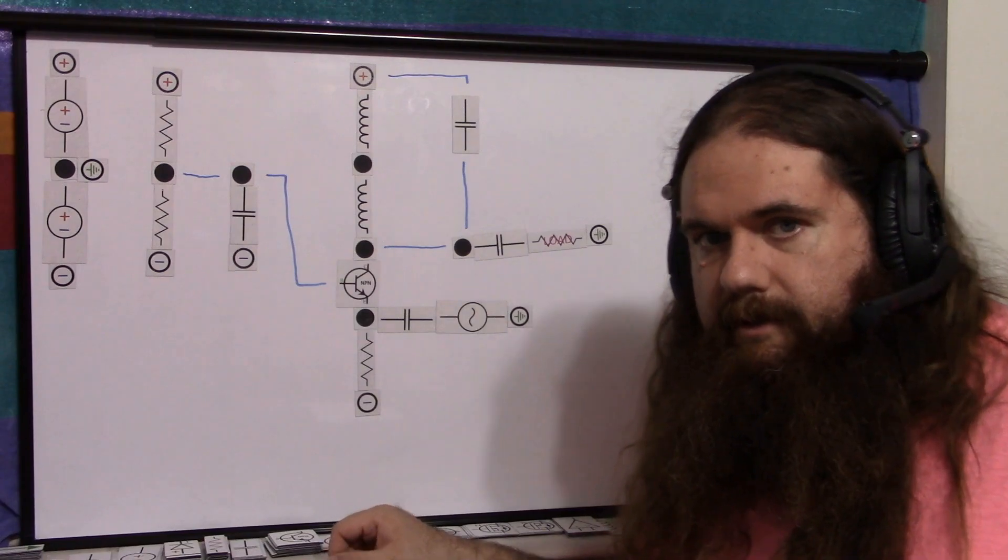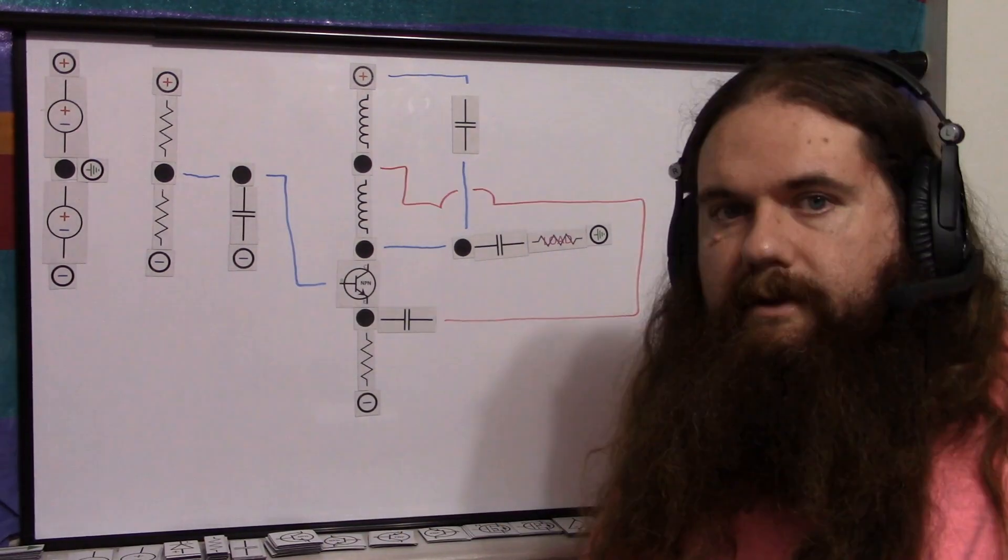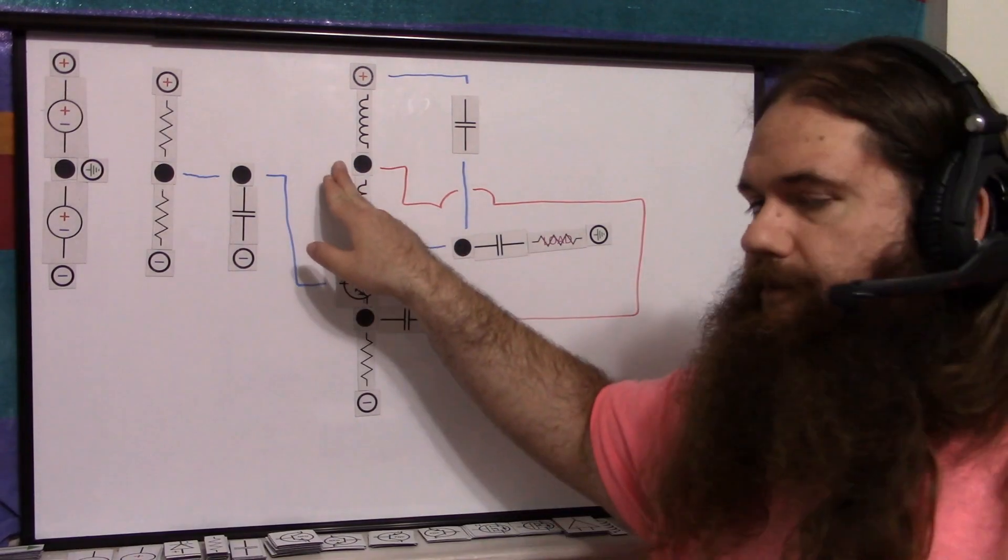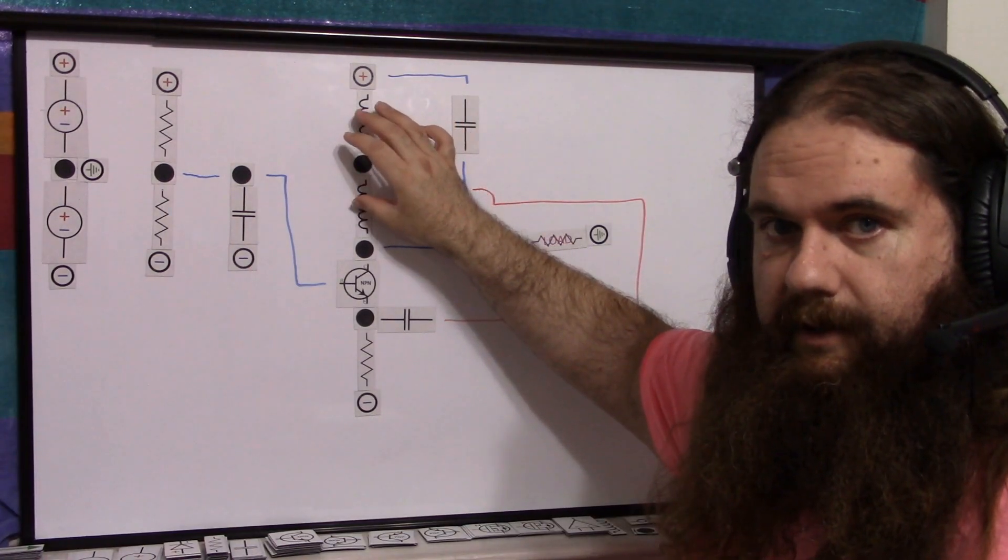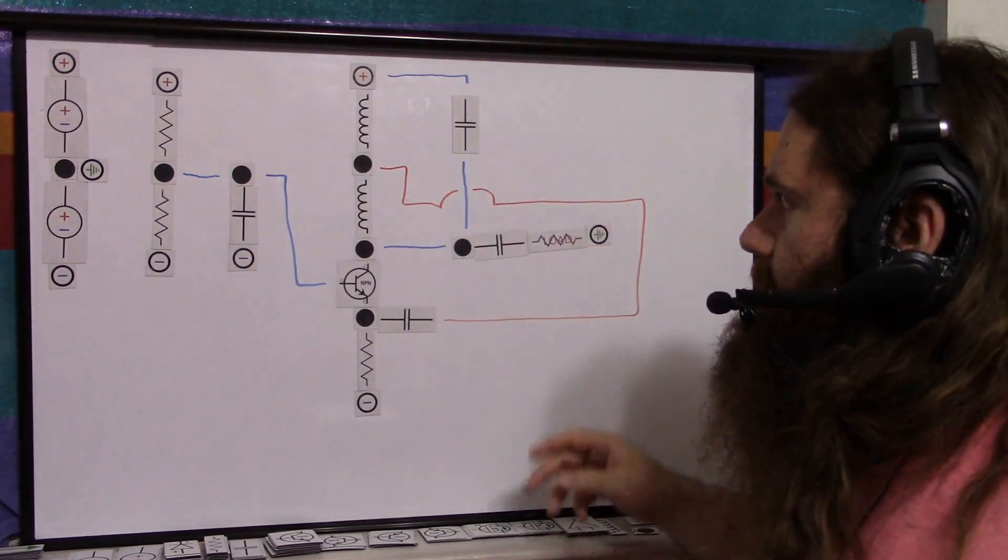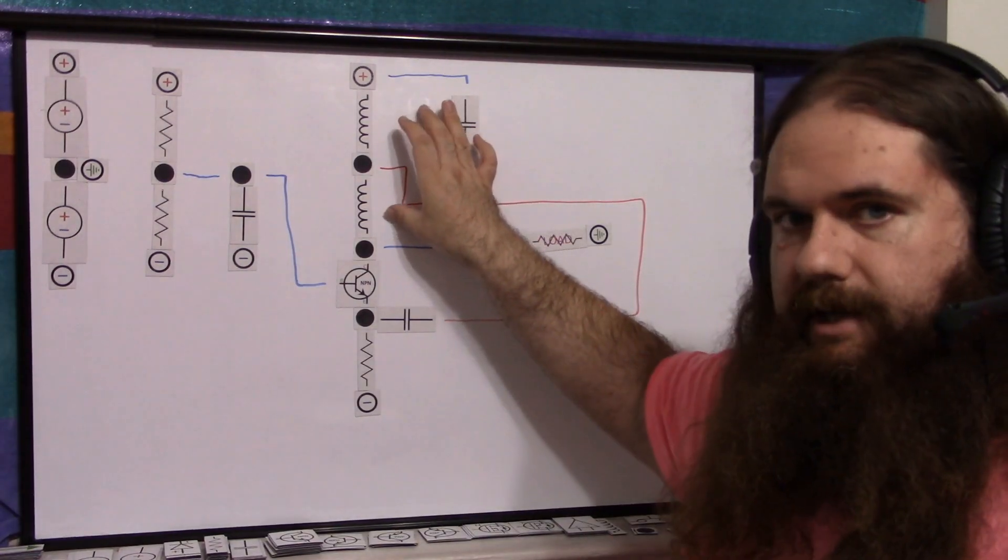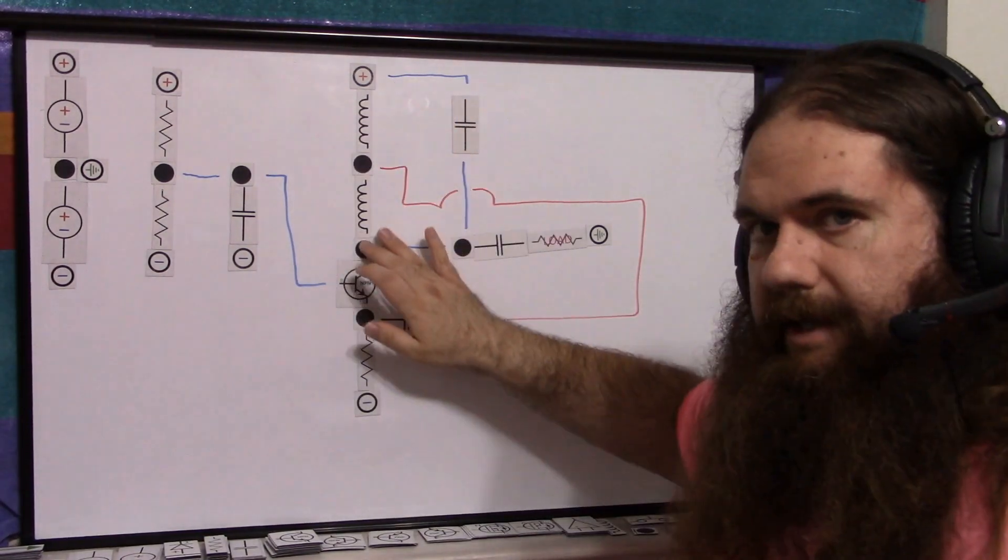That was step one. Step two, obviously, is we don't have an input signal. What do we have? The oscillator is also the signal input taken from in between the two inductors, which allows the ratio of the inductors to have effects on certain things. But what's basically happening here is there is energy in this oscillator and it is oscillating. It just is.